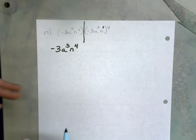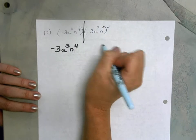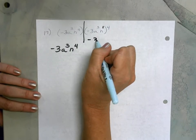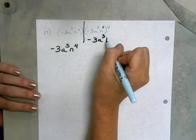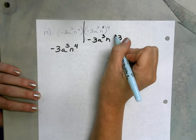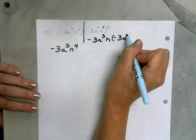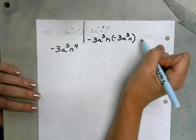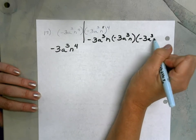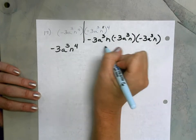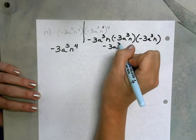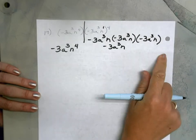And if you're not quite seeing that yet, feel free to write it out. So you could write this out as negative 3a to the 3rd times n, negative 3a to the 3rd times n, and then negative 3a to the 3rd times n. That's what this means.